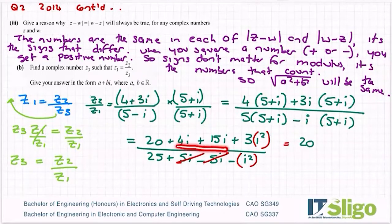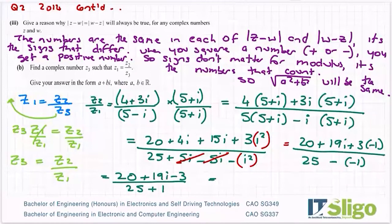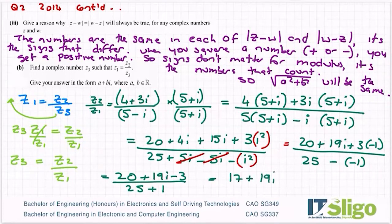i squareds, they'll always say at the start of the question is minus one. So let's sub in for them. I'll have 20, and I'm going to add these - 4 and 15 is 19i plus 3 times minus 1. I'm subbing in for my i squared. And on the bottom, I have 25 minus minus 1. So what do I have on the top then? 20 plus 19i minus 3. And on the bottom, I have 25 plus 1. So 20 minus 3 is 17 plus 19i - and it's tradition that you write the real part first and then the imaginary part - over 25 plus 1 is 26.